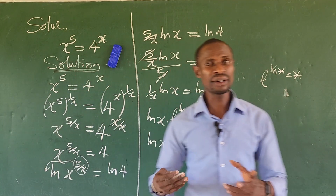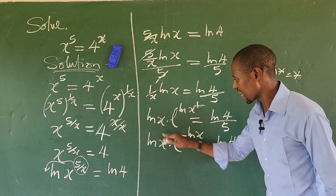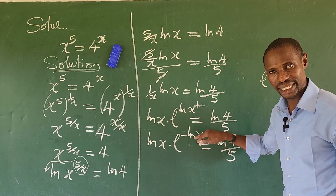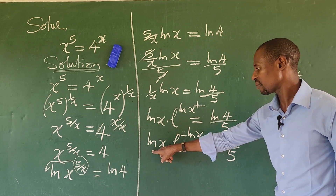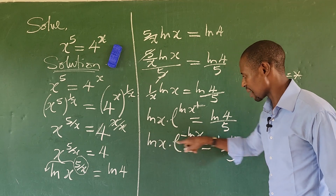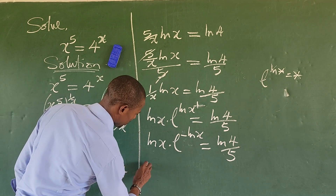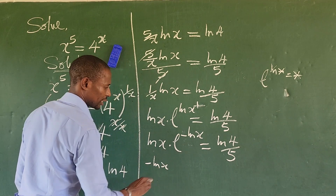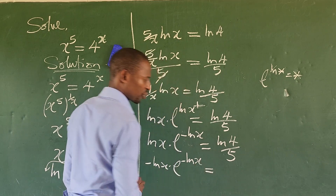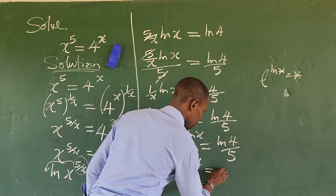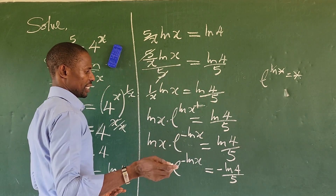Now we want to invoke the Lambert W function. Before we can do that, we must make sure that what we have at the base and what we have in the exponent are the same. We currently have minus ln of x in the exponent but not at the base, so we multiply both sides by minus 1. This gives us: minus ln of x times e to the power of minus ln of x, equal to minus ln of 4 over 5.